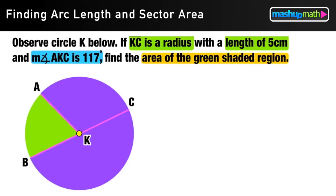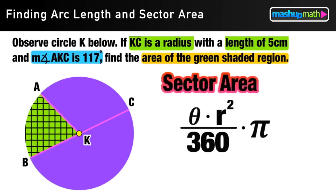And we want to find the area of the green shaded region. Now we're going to be using the sector area formula for this question. Because we want to find the area of one sector, one portion of the inside of that circle.